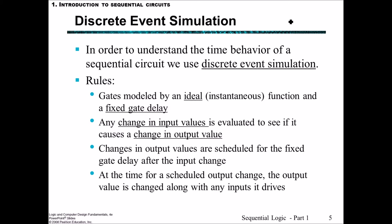When thinking about a signal propagating through a circuit, it's useful to have a timing axis so we can see the state of the signal at all points in the circuit. When there is any change in the input value, we evaluate the modeled circuit to see if it causes any change in the output values. Changes in output values are scheduled to occur after consideration of all fixed gate delays, and then after that fixed gate delay the output changes. We assume no time delay along a wire — a signal takes time to pass through a gate but not to travel along the wire.